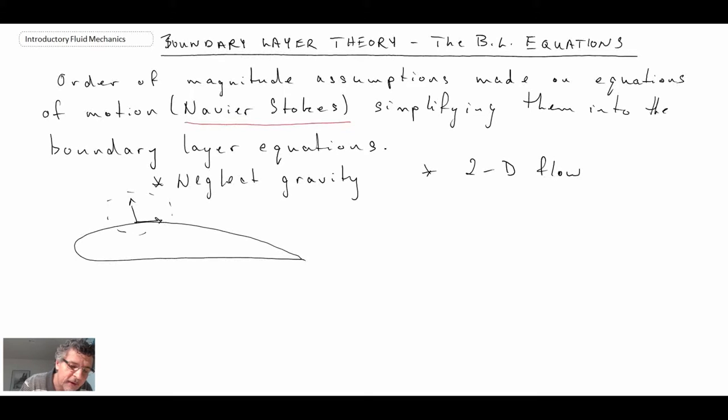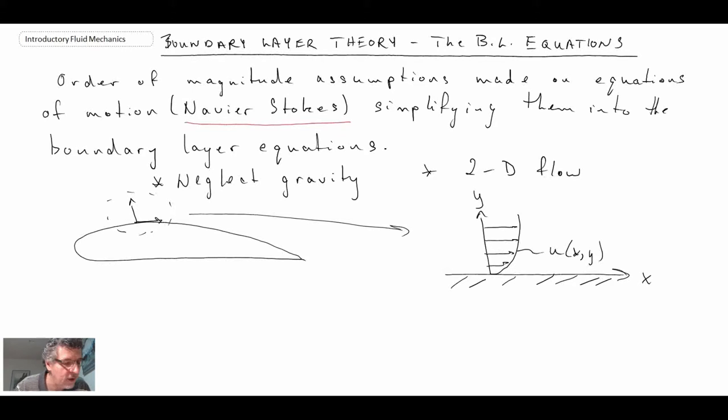We're going to zoom in on this region and consider a section normal to the wall. So x is going to be in the wall direction and we're going to examine the boundary layer in this region. And then outside of that would be the free stream flow. This is going to be the velocity profile as a function of both position in the x direction as well as normal to the wall in the y direction.